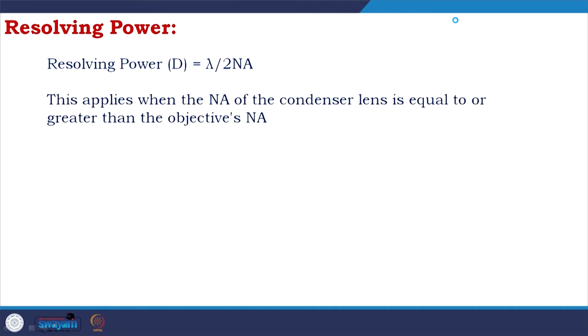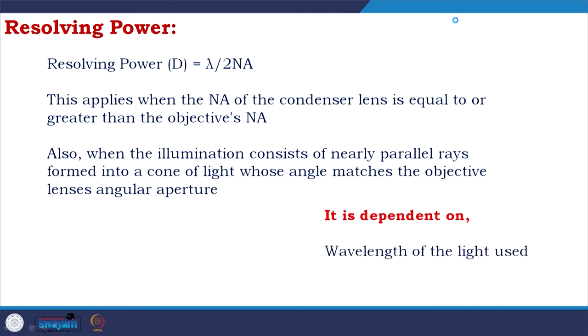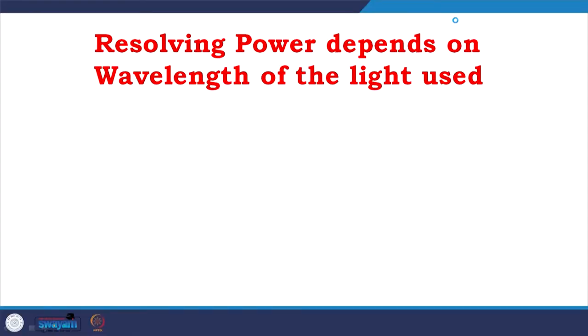Resolving power d = λ / 2·NA, where NA is the numerical aperture. This applies when NA of the condenser lens is equal to or greater than the objective's numerical aperture, and when the illumination consists of nearly parallel rays forming a cone of light whose angle matches the objective lens's angular aperture. Resolving power depends on the wavelength of light used and the numerical aperture of the lens.